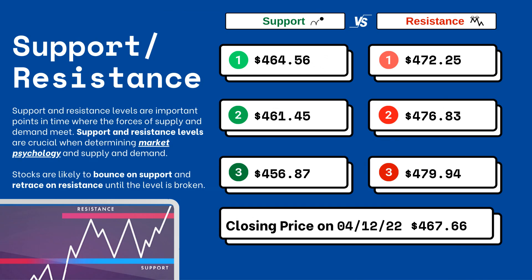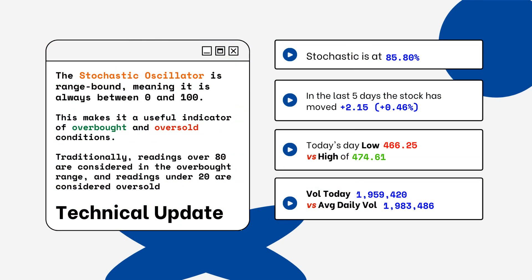On the right side you'll see three support levels and also three resistance levels. These are areas that you want to watch when looking at this particular stock. Stocks typically bounce at support levels and resist at resistance levels, meaning they'll retrace from that top level.